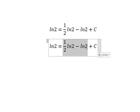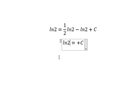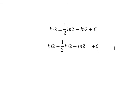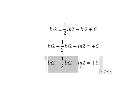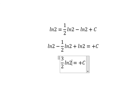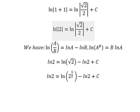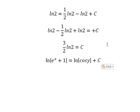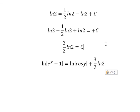Putting everything together on the left side, we get 1 − (1/2), which gives us (3/2)·ln 2. So C = (3/2)·ln 2. We substitute this value of C back into our equation to get the final answer. Thank you for watching.